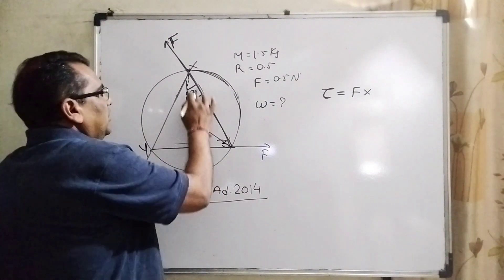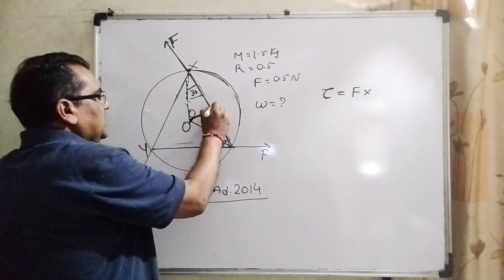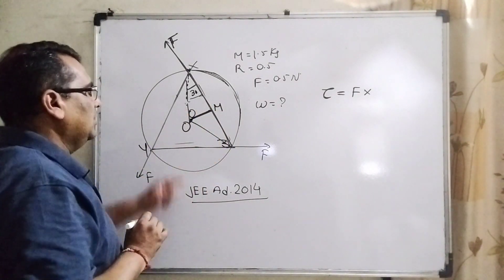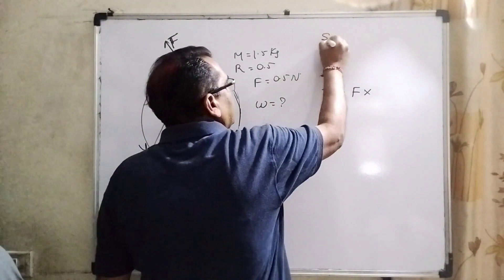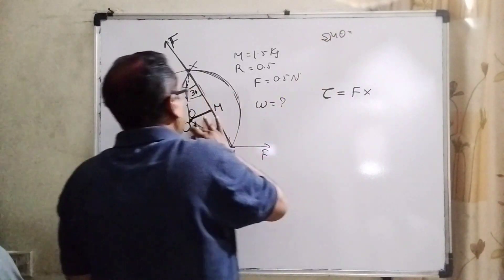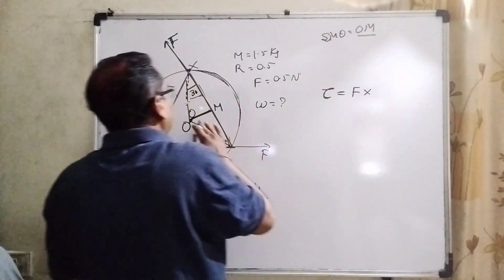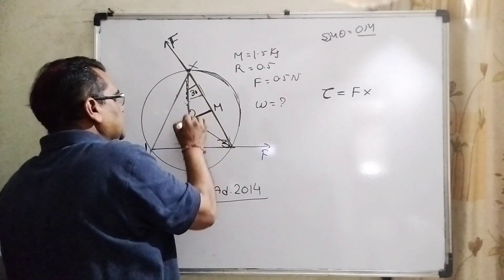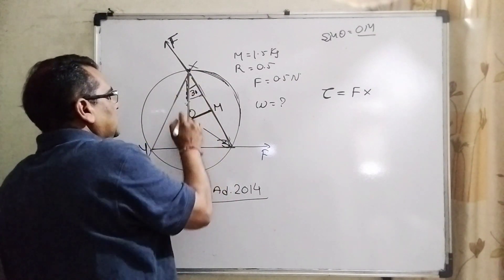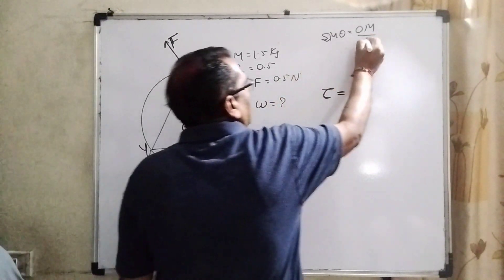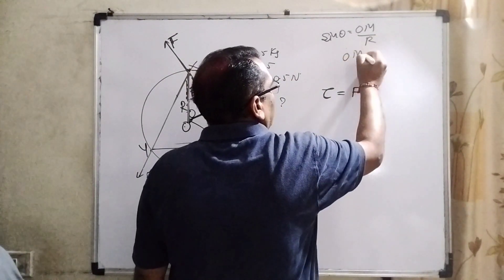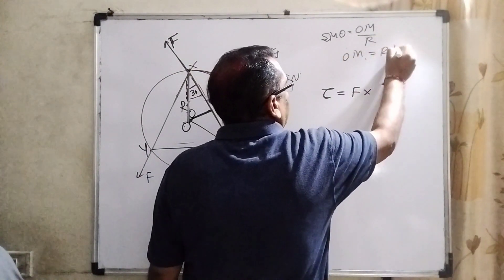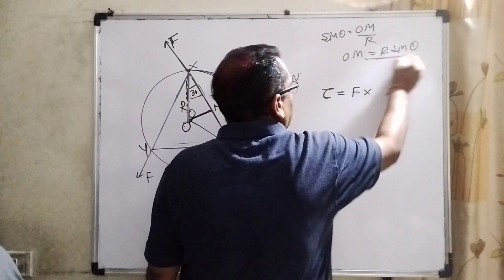So this is O. Let us consider this point is M. Then sin theta equal to perpendicular OM and hypotenuse is this side OX. This is the radius. Then OM equal to R sin 30. This is the perpendicular distance.